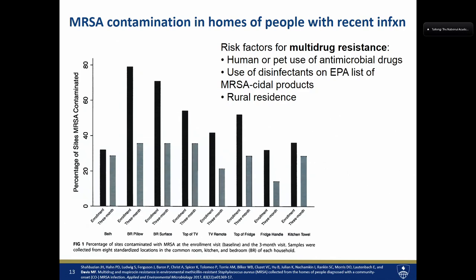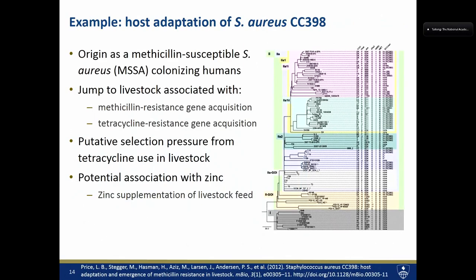This begs the question: what are these environmental chemicals that can be associated with resistance in this very important human pathogen? We have another example from Dr. Lance Price and colleagues who used genetic testing of Staph aureus strains of a very emergent clone termed CC398 — clonal complex 398 — on the basis of strain typing.